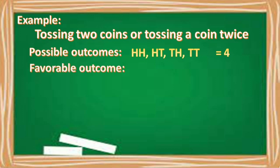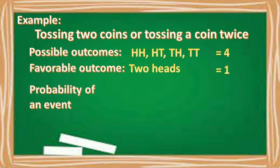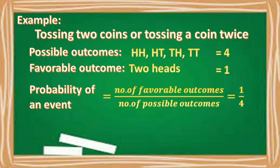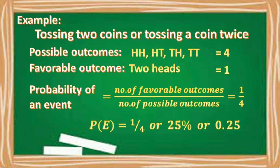Let us assign our favorable outcome — say, two heads. If you will notice that among the four possible outcomes, only one (head-head) comes out. Therefore, the number of favorable outcomes is 1. Thus, the probability of an event is equal to 1 over 4, or one-fourth — P(E) = 1/4, or 25%, which is also equal to 0.25.